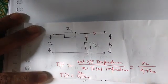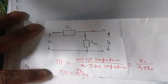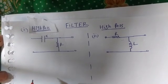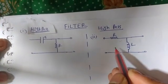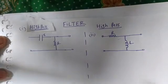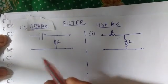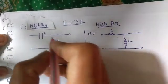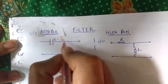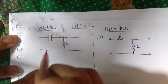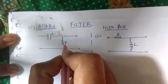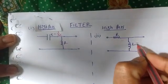Now we will write the transfer function of low pass filter and high pass filter. We can make a high pass filter using an inductor or a capacitor, in two ways. To write the transfer function quickly, we first replace the capacitor by 1/SC, keep the resistor as R, and replace the inductor by LS. This converts the circuit into Laplace impedance form.